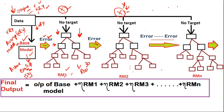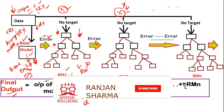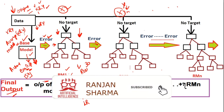We have residual model 1, residual model 2, residual model 3, up to residual model N. The final output equals: output of base model + learning rate × RM1 output + learning rate × RM2 output, and so on. All errors are added to the base model output. I'll show in the next slides how this works.